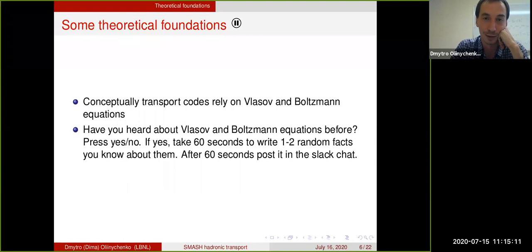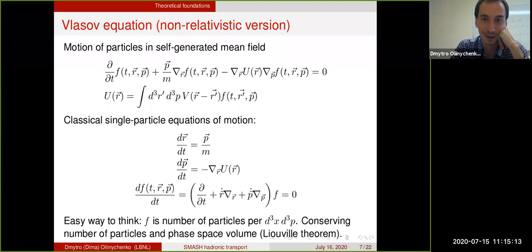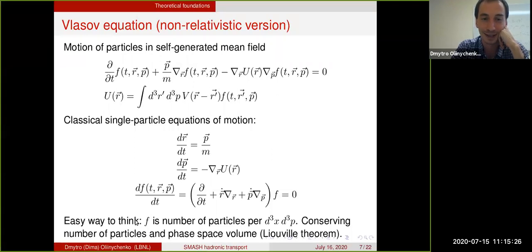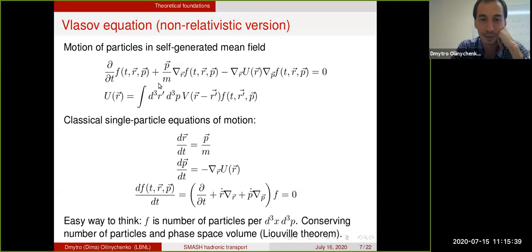So this is immediately the Vlasov equation. It looks like a big equation. It is an equation for the variable f, which is a distribution function. At the bottom of the slide, it is easy to think about it as the number of particles per unit of phase space volume. The whole Vlasov equation, although it looks complicated and long, is just about conserving the number of particles in phase space volume.